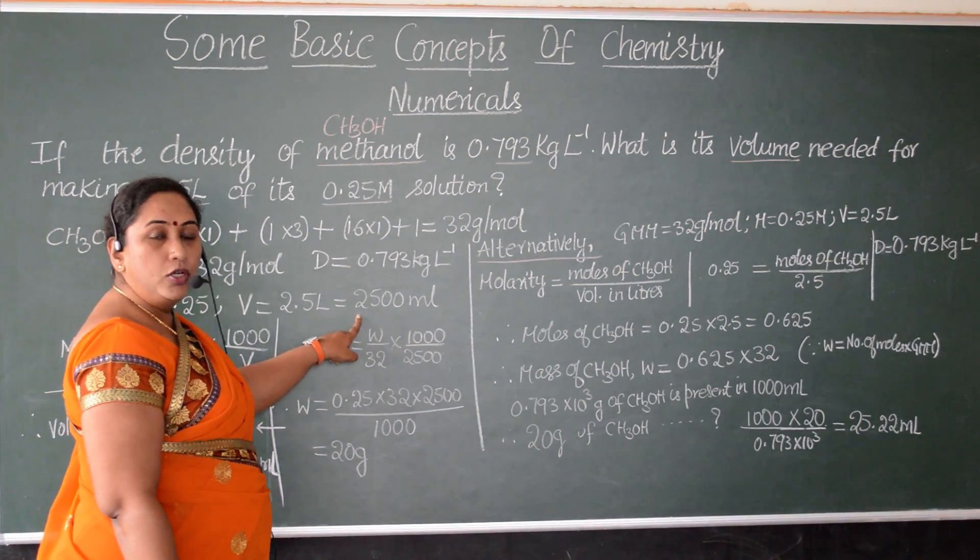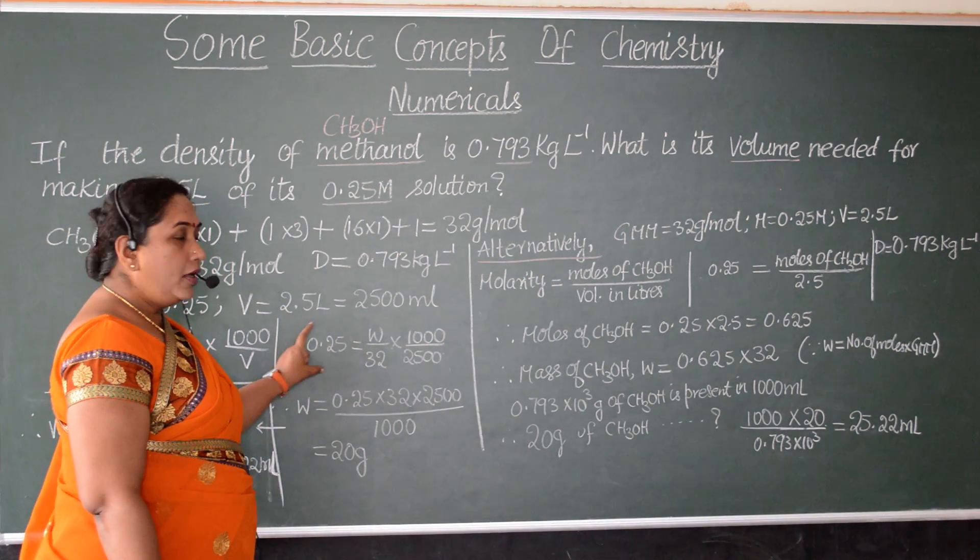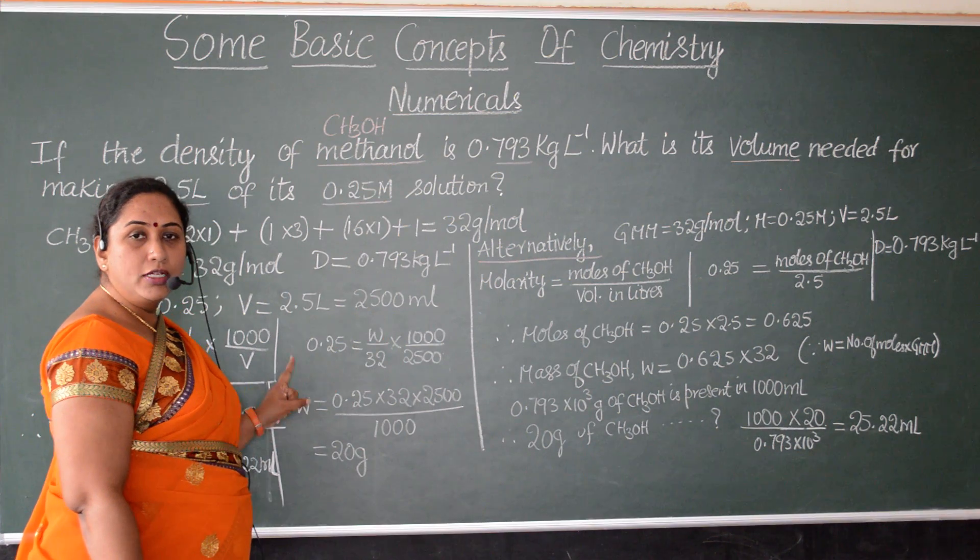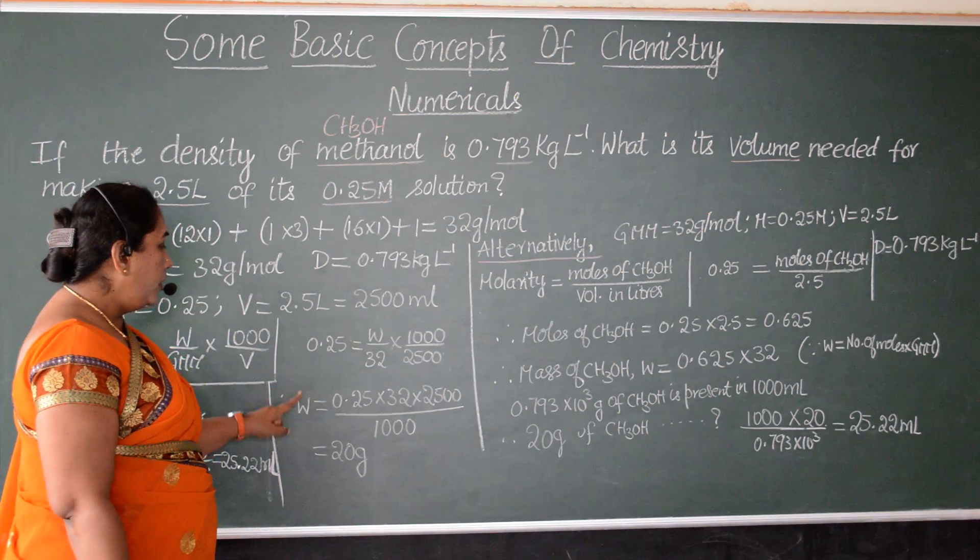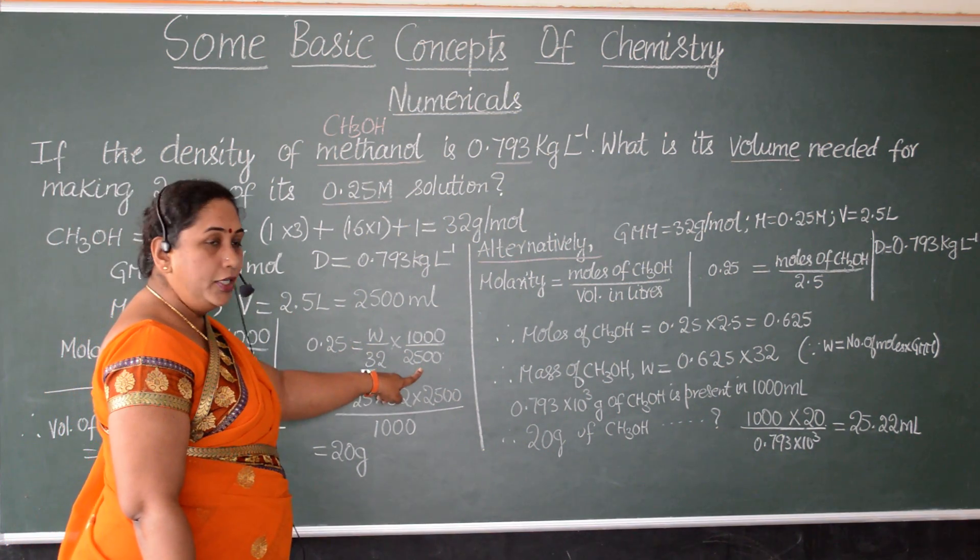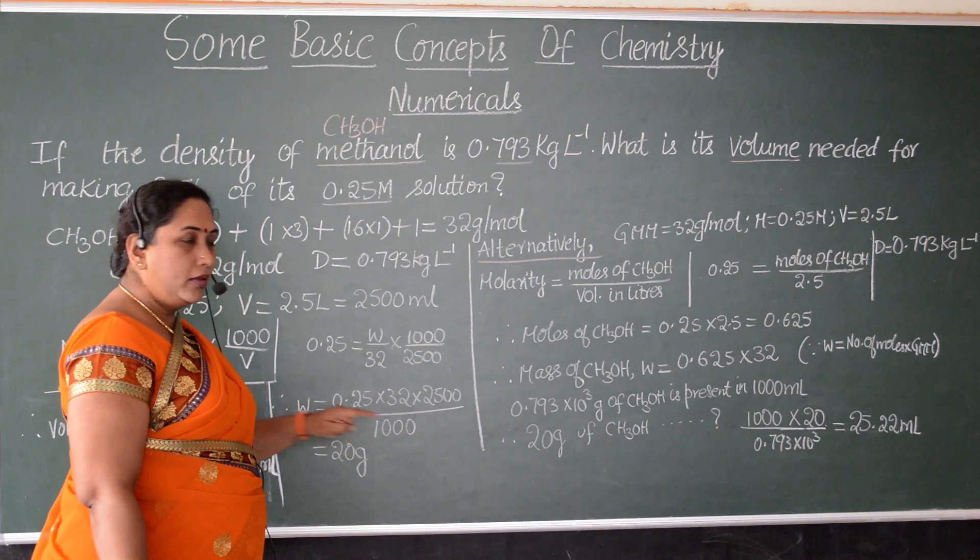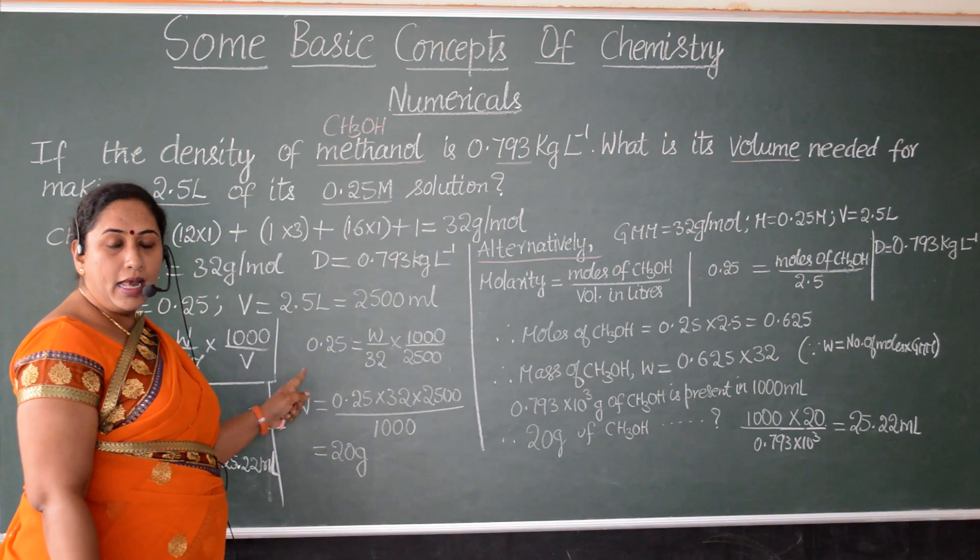So, let us keep it as W only. Gram molecular mass is 32 into 1000 by V. V value is 2500 ml. So, when we put the values like this, then it is easy for us to substitute for W. What will be W equal to? W will be equal to molarity into gram molecular mass into volume divided by 1000. So, when we simplify this, we get the answer as 20 grams.